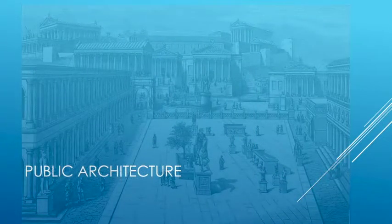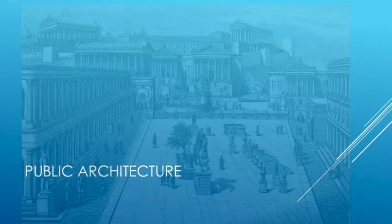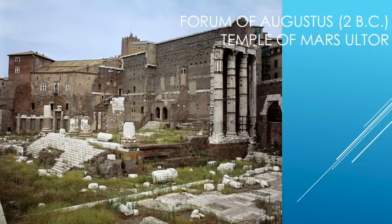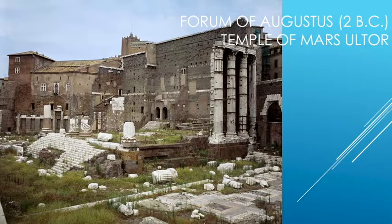Public architecture is the complement to the private realm and is very important in the Roman world. It creates public spaces and allows for the communication of messages to the populace. A lot of the architecture in the public sphere is show architecture — it may not have an explicit utilitarian function, but it has an ideological function. For example, the Temple of Mars Ultor, located in the Forum of Augustus and completed in 2 BC, is an example of a public architectural space.